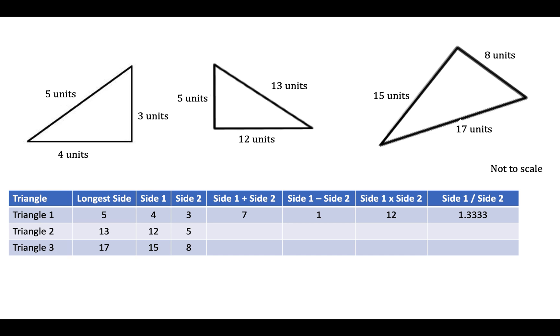I'm not seeing anything there just yet, but let's try triangle two. If we add the two shorter sides together we get 17, subtracting gives 7, multiplying gives 60, dividing gives us 2.4.